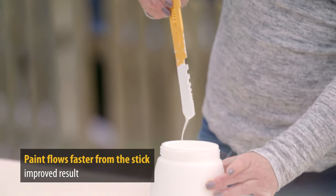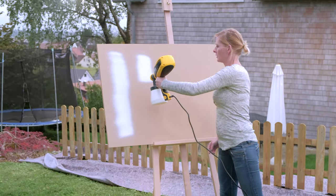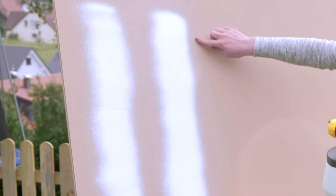The paint now flows much faster from the stick. As you can see, after dilution, the area of paint on the right is significantly larger than that on the left.